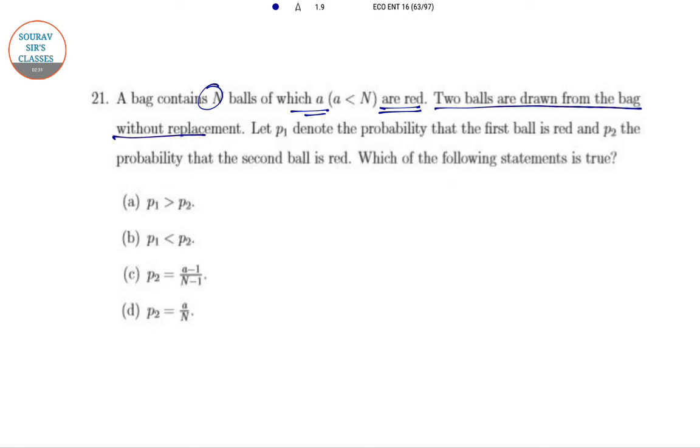Without replacement means the total number of balls is decreasing. With replacement, the total number of balls remains the same, but here it is falling. Total balls given are N, and among them, a are red.